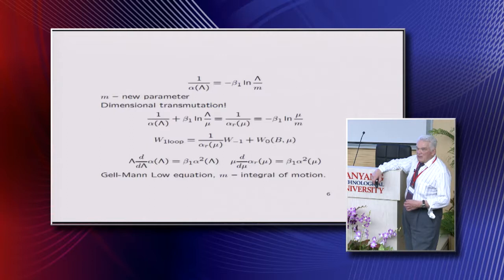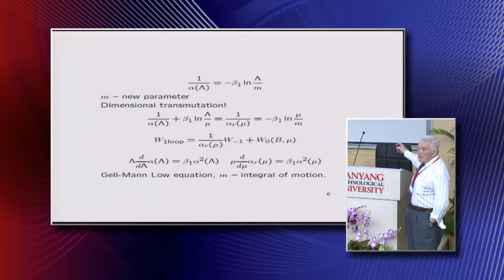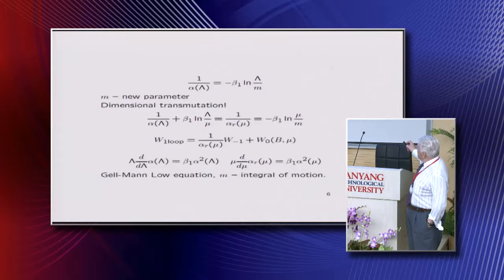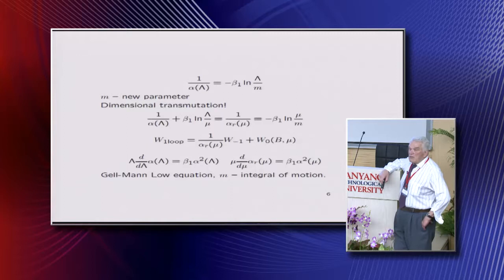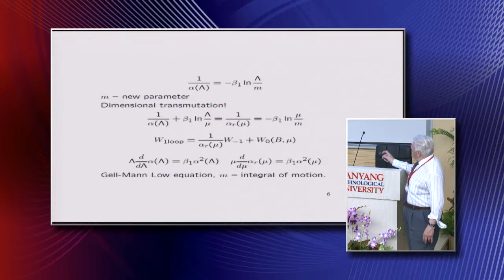This is what is called dimensional transmutation. Indeed, now you have your infinite term being equal to regularized coupling constant, which also has the same formula, but instead of lambda you take mu, and instead of M, M is here. This is now your new coupling constant, which forgets the original coupling constant and just has this M here. What is M? M is integral of famous Gell-Mann-Low equation.